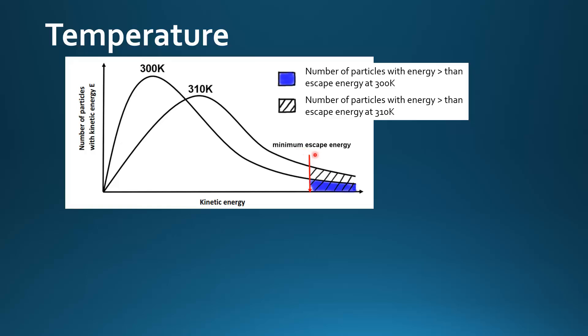That is the minimum energy needed to evaporate. The blue region represents the number of particles with energy greater than escape energy at 300K, and the shaded region represents the number of particles with energy greater than escape energy at 310K.